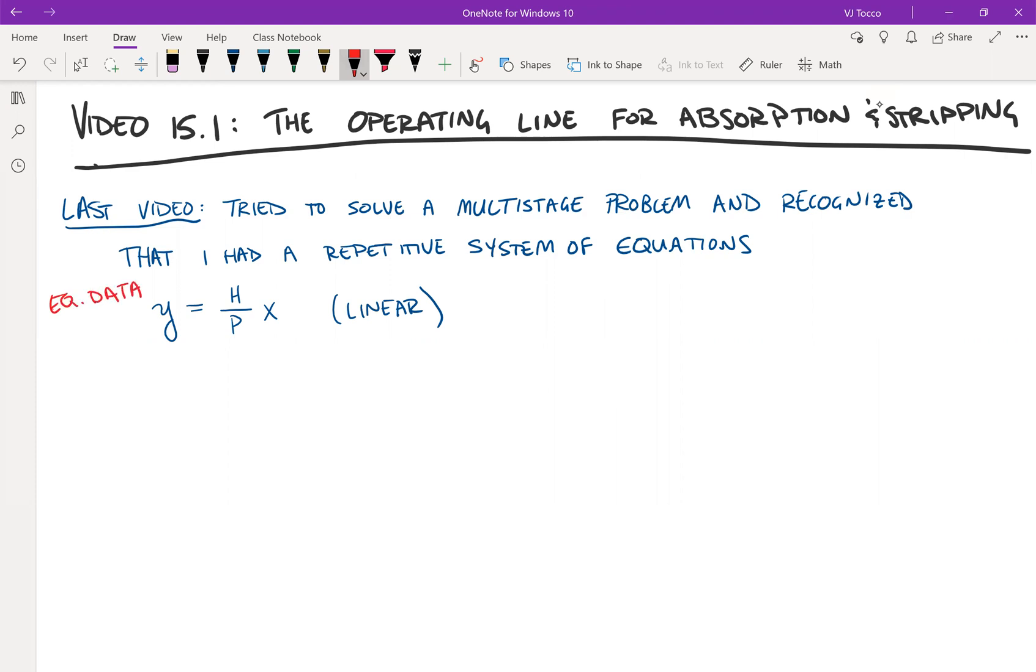Once again, because when we write it like this, we know that y is a linear function of x. We have a slope and we have the intercept. So we can go ahead and plot that.